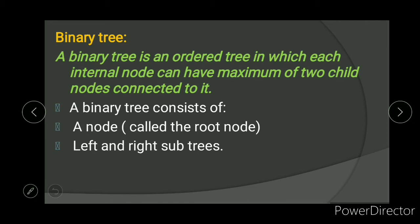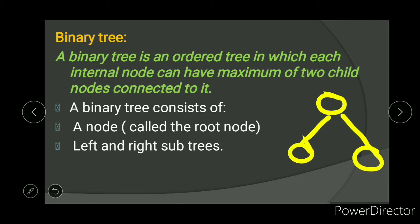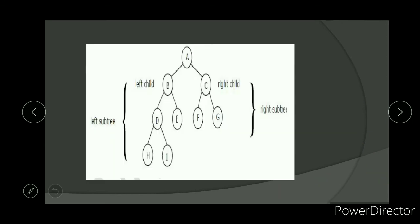A binary tree is an ordered tree in which each internal node can have a maximum of two child nodes. A binary tree consists of a root node, a left node, and a right node, which form subtrees. For example, node A has left child B and right child C; B contains children D and E; C contains children F and G; and D can also contain up to two children.